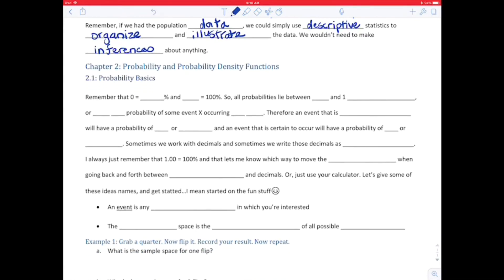Alright, so here we go. Starting with Chapter 2, we'll look at the probability basics. So 0 is 0% and 1 is 100%. So all probabilities lie between 0 and 1 inclusive. Or, 0 is less than or equal to the probability of some event X occurring, which is in turn less than or equal to 1. Therefore, an event that is impossible will have a probability of 0 or 0%, and an event that's certain to occur will have a probability of 1 or 100%.